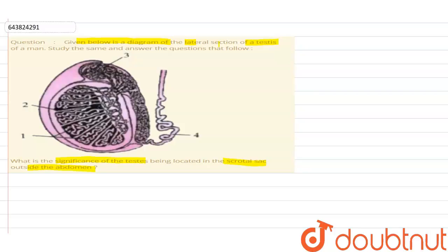So first let us find out the markings. The first one represents seminiferous tubules.